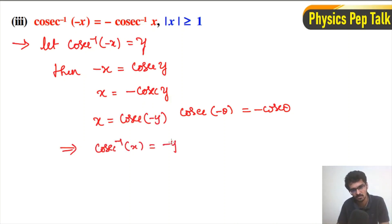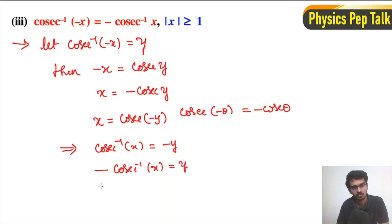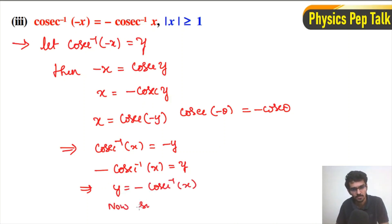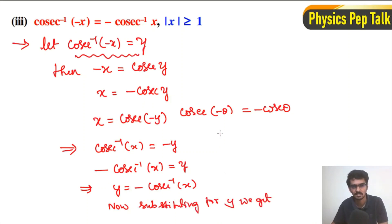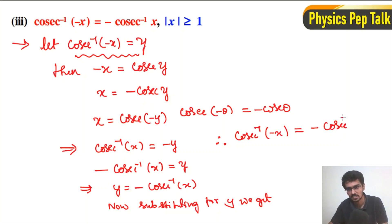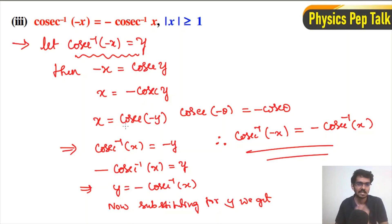Then again this can be written as cosec inverse of x is equal to minus y. Rearranging, we get y is equal to minus cosec inverse of x. Now substituting for y we get cosec inverse of minus x is equal to minus cosec inverse of x. This is the required result.